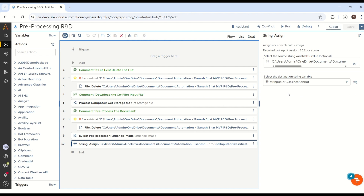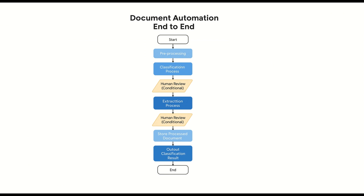Now if you have confusion, let me try to show you the document automation end-to-end flow. What we did till here: we have utilized the input coming from the users — here we are using Copilot. After that, we are jumping into pre-process, and here we are pre-processing the copilot input, downloading it and pre-processing. Now this pre-processed output is the input for my classification process. This output will be the input for the classification process — not the direct input you received from your user — because we have pre-processed that document and saved it under the output folder. That output folder will be the input for the classification process.